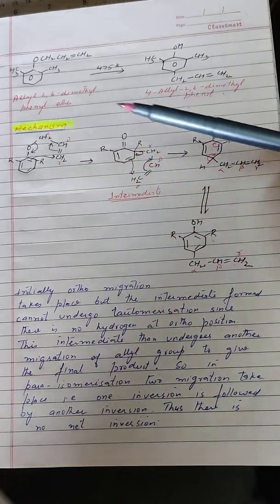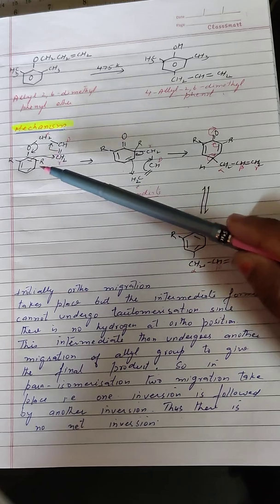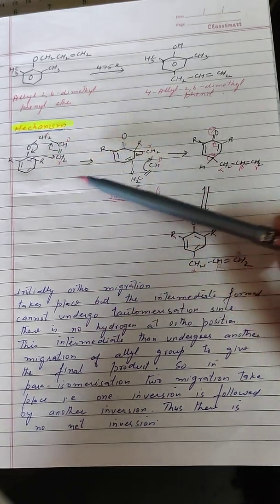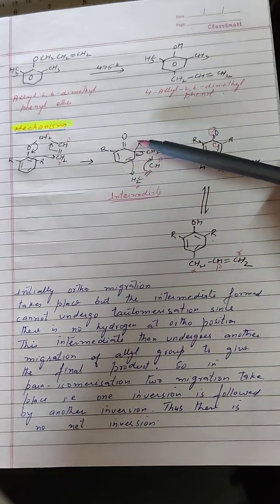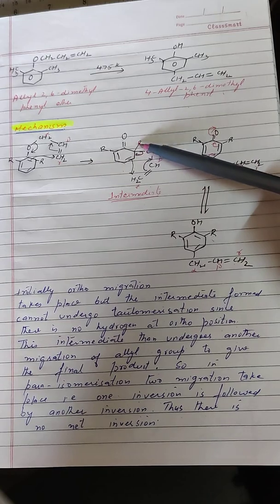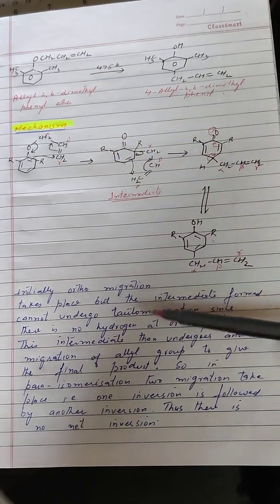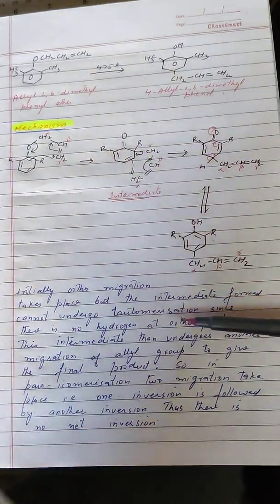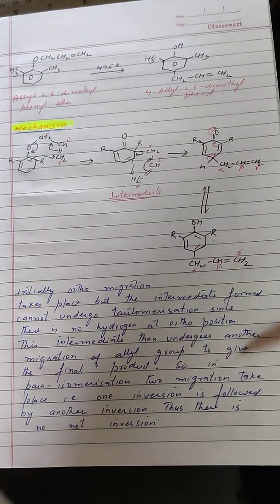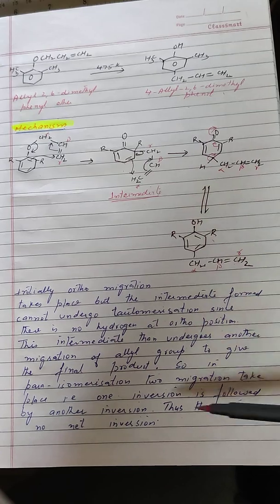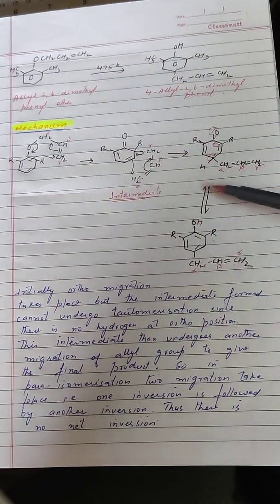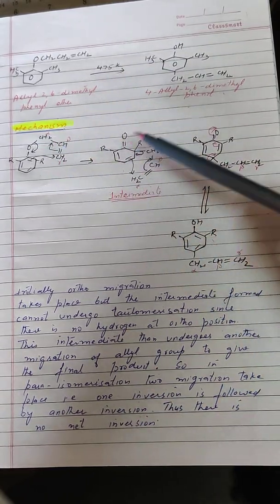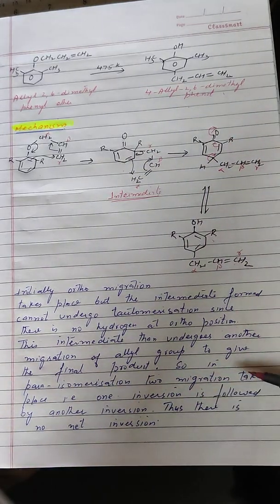The mechanism shows that two migrations actually take place. Initially ortho migration occurs and the intermediate formed has no hydrogen at the ortho position, as those positions are occupied by alkyl groups. So the intermediate undergoes a second migration, shifting the allyl group to the para position. Thus for para migration, two migrations and two inversions take place.